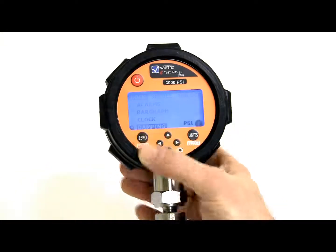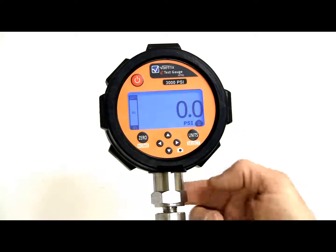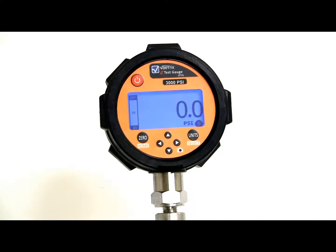So, that's a quick overview on the VATRIX ETG. It has a quarter inch MPT connection, stainless, runs on three AA's, gets you about a thousand hours on three standard alkaline.